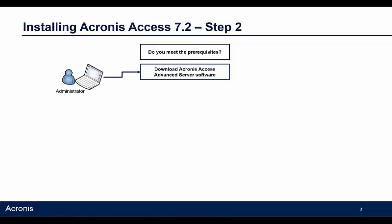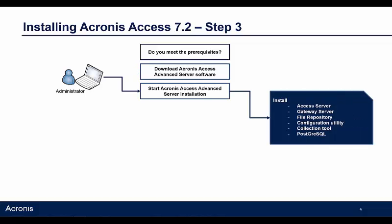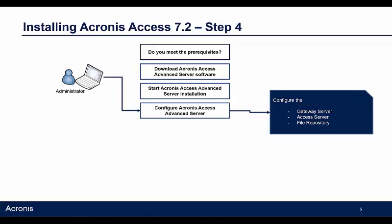You just need to download the Acronis Access Advance software from the Acronis website. The Acronis Access Advance installation will first install the PostgreSQL database, then the Access server, the Gateway server, the file repository, and the configuration utility and collection tool.